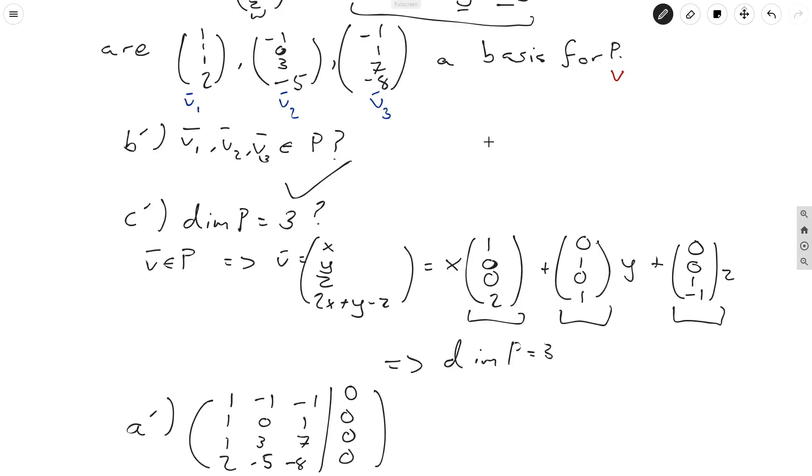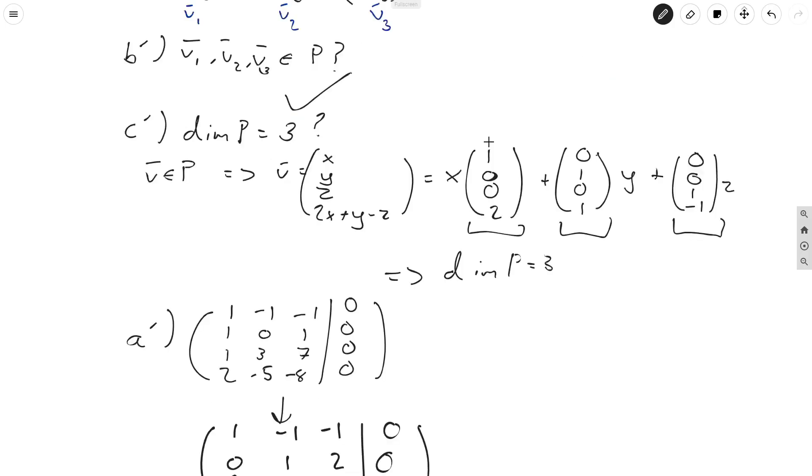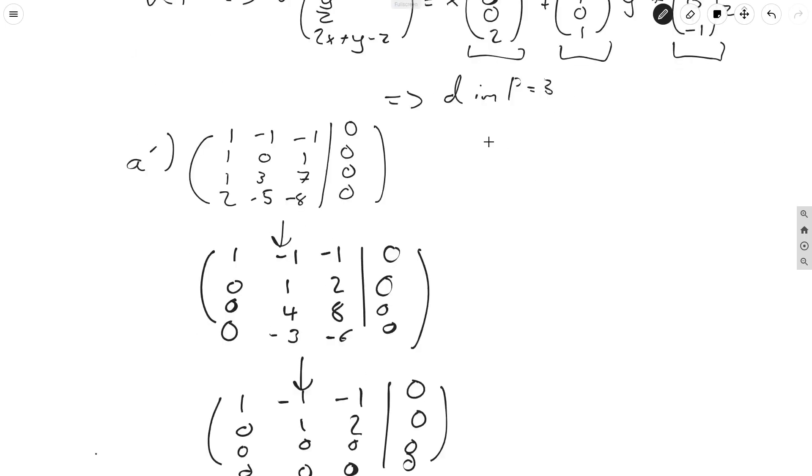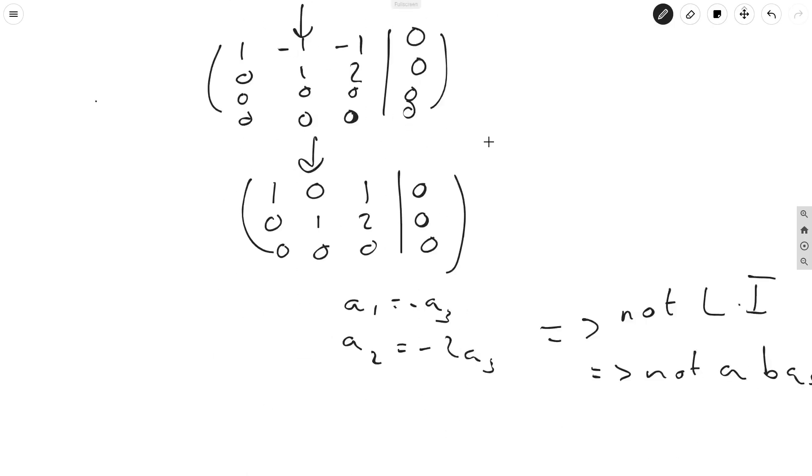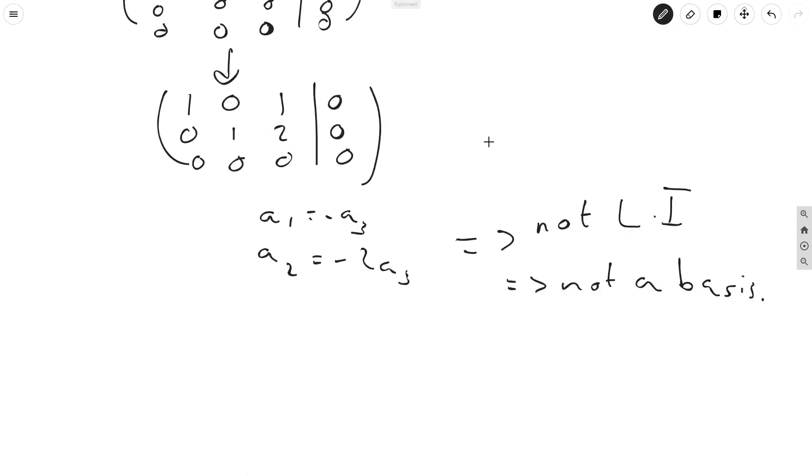So what do we do again? We just set up the augmented matrix equation, which has as columns the first vector, the second vector, and the third vector. And we'll see that when we go through it, it immediately reduces to (1, -1, -1), (1, 2, 4), (8, -3, -6). So these last three rows are all multiples of each other, so they reduce immediately to this. And this clearly comes down to a singular matrix.